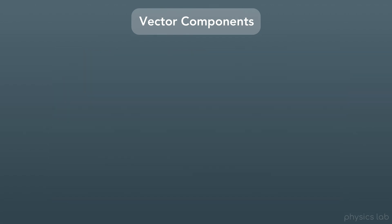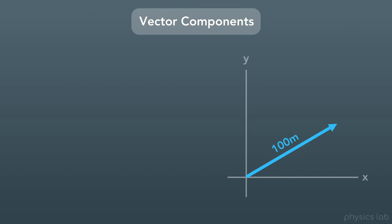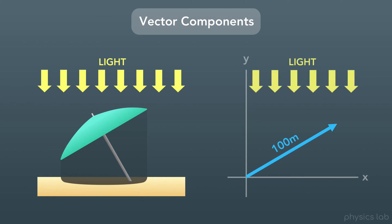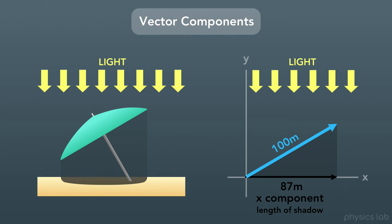Another way to think about components is to imagine the vector casting a shadow on each of the two axes. Let's say you're at the beach with an umbrella, and the sun was shining down across the whole beach. Your umbrella would create a shadow on the sand, but the shadow isn't the entire length of your umbrella — it's only the length of the umbrella that is blocking the sun from shining straight downwards and reaching the sand. The same thing is true for finding components of a vector along the x and y axes. If you had a light shining down parallel to the y-axis, the vector would cast a shadow onto the x-axis. The length of this shadow is the vector's component along the x-axis, also known as the x-component.